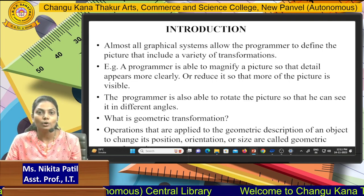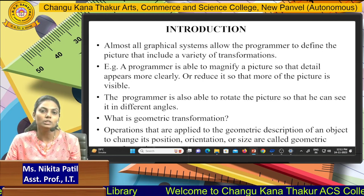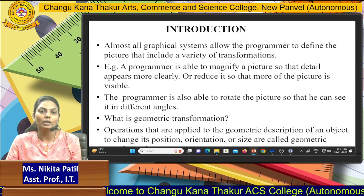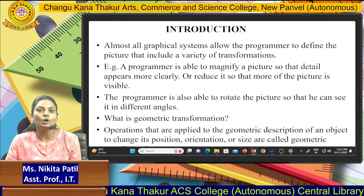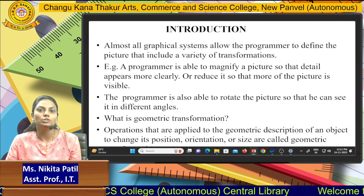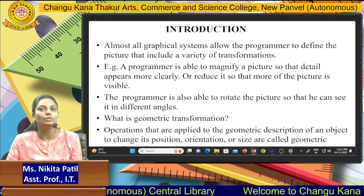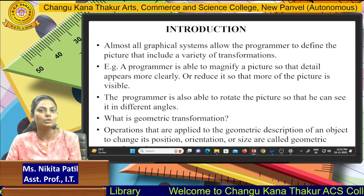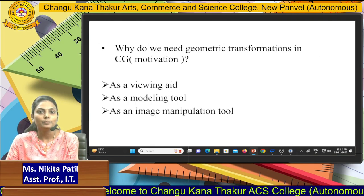So what is geometric transformation? Geometric transformation is basically based on vector space. In vector space you can use edges for your lines and curves, and geometric shapes are also made of lines and curves. So geometric transformation is used for operations that are applied to the geometric descriptions of an object to change its position, orientation, or size — these are called geometric transformations.